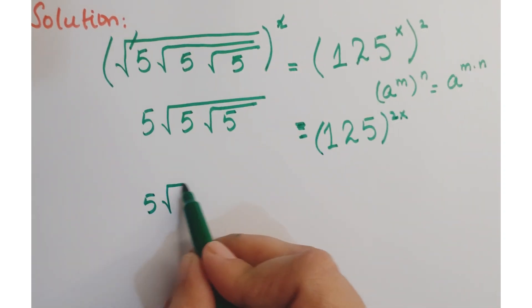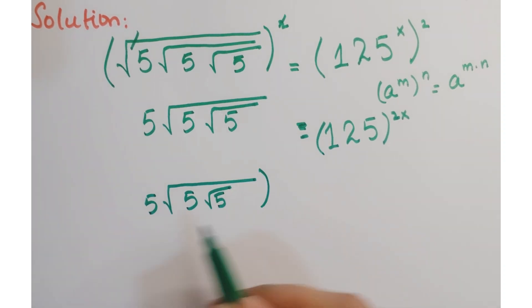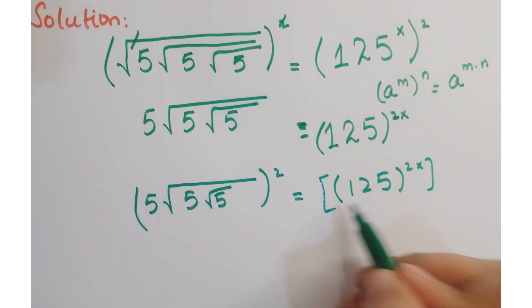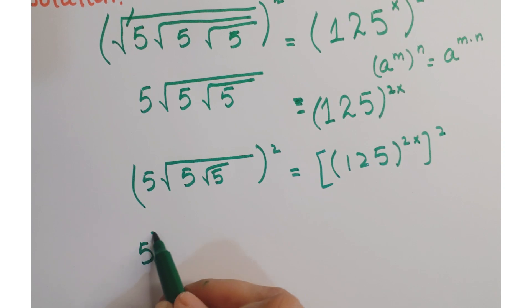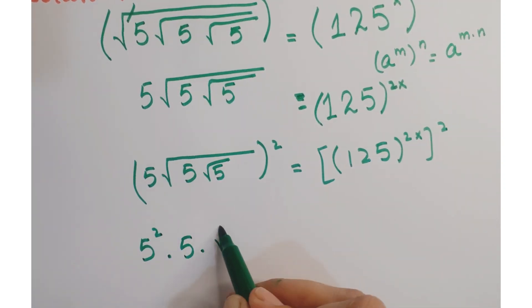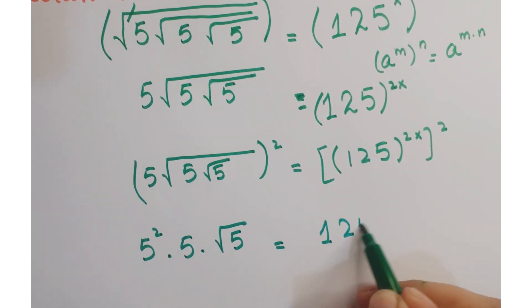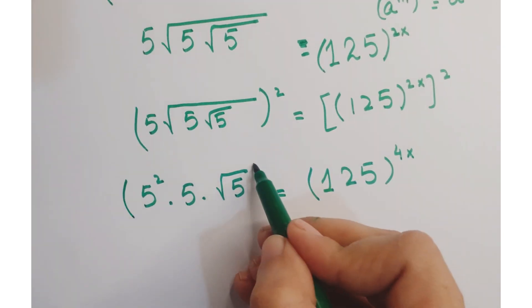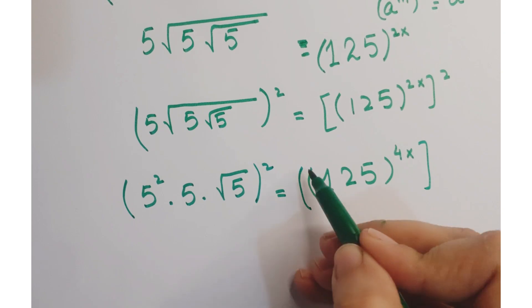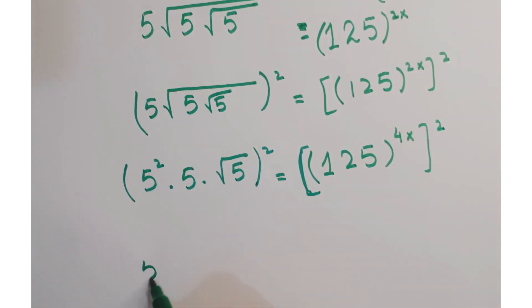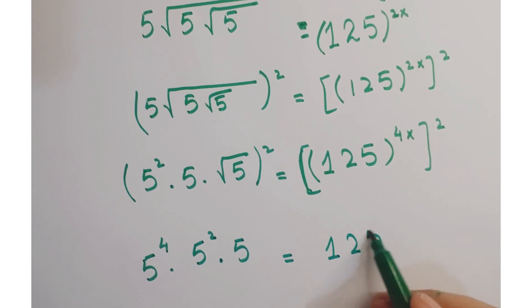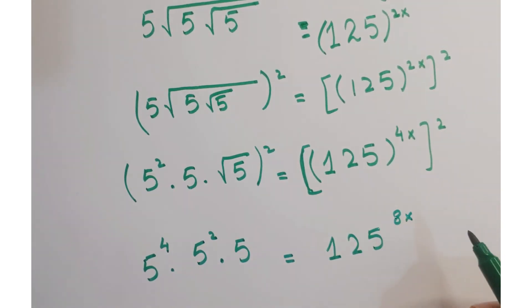Now, again applying squaring both sides. So here we get 5 square into 5 into under root 5 equals 125 whole to the power 4x. So here we get 5 to the power 4 into 5 square into 5 equals 125. Now these powers get multiplied, whole to the power 8x.